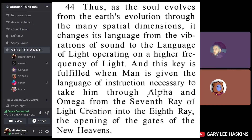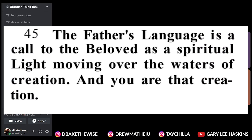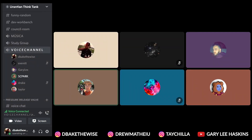Thus, as the soul evolves from the Earth's evolution through the many spatial dimensions, it changes its language from the vibrations of sound to the language of light, operating on a higher frequency of light. This key is fulfilled when man is given the language of instruction necessary to take him through Alpha and Omega, from the seventh ray of light creation into the eighth ray — the opening of the gates. The eighth ray, the Christ chakra. The Father's language is a call to the beloved as a spiritual light moving over the waters of creation — in you are that creation.